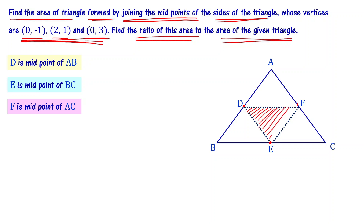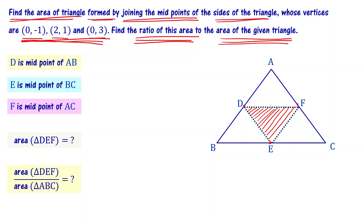The area of this second triangle is the first part of the problem. The second part is to find the ratio of the area of triangle DEF to the area of the given triangle ABC. We have to find: area of triangle DEF divided by area of triangle ABC.